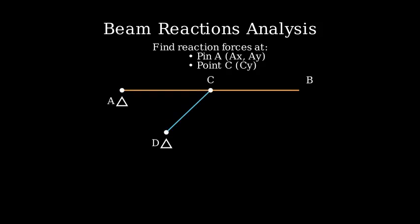We have a horizontal beam AB that's three meters long with a pin support at A and a roller support at C connected to a diagonal member CD. A four kilonewton force acts downward at point B.